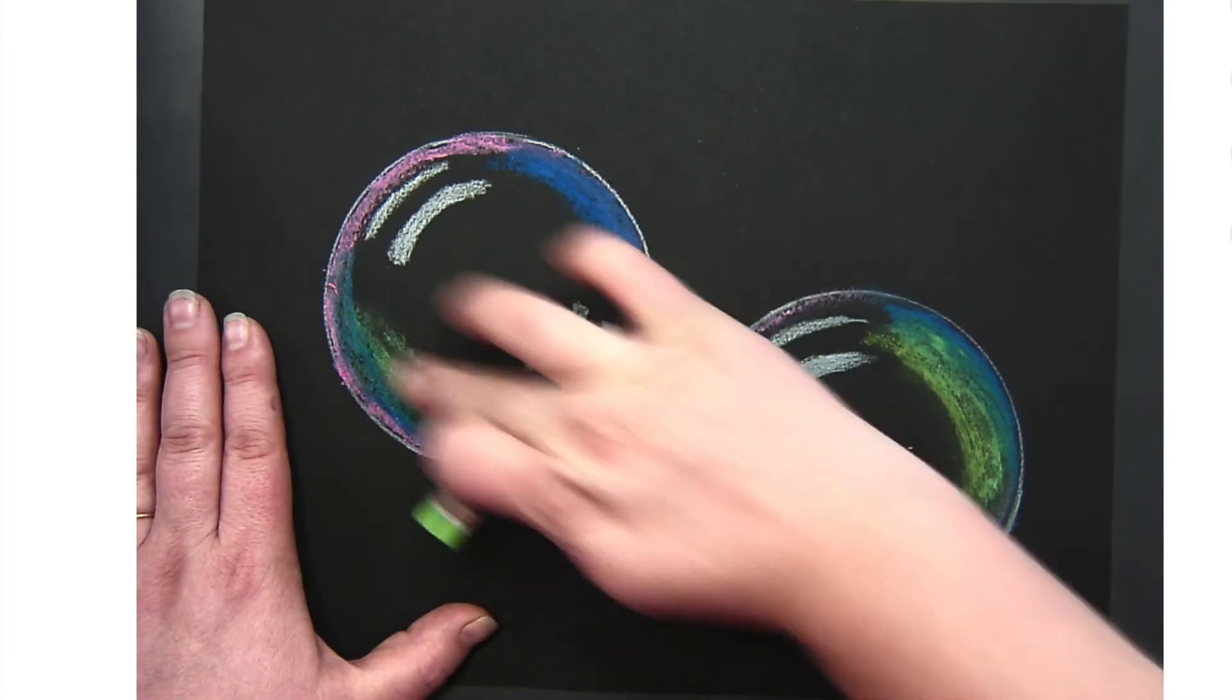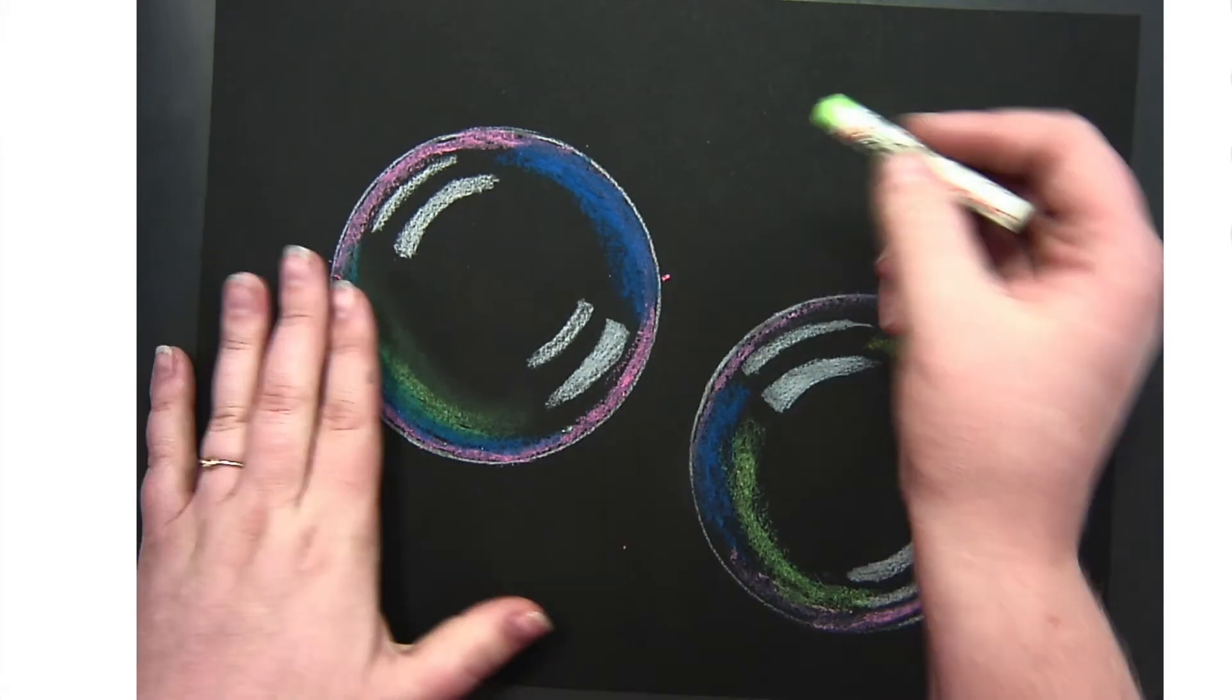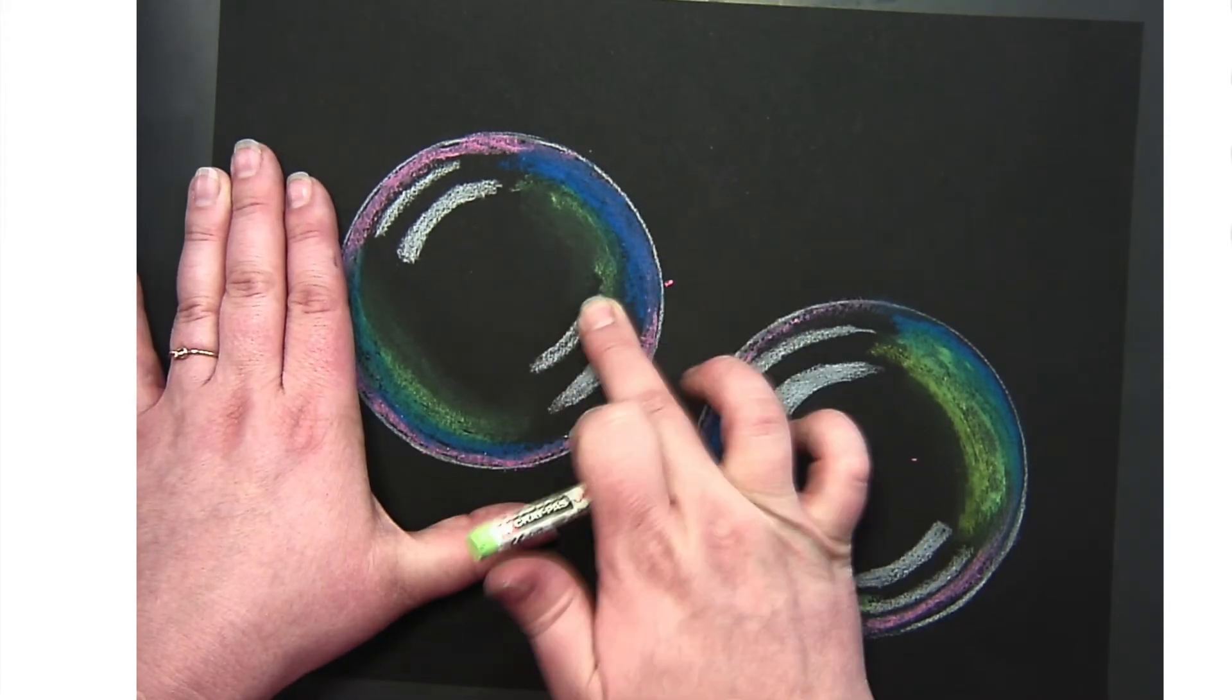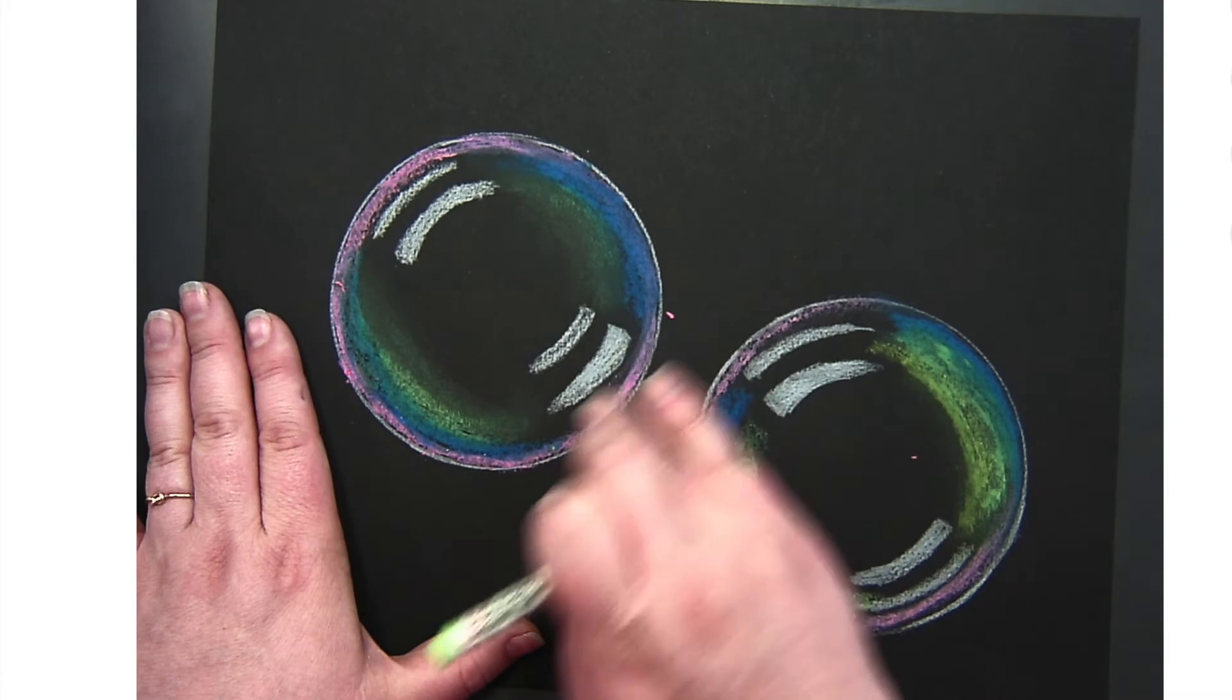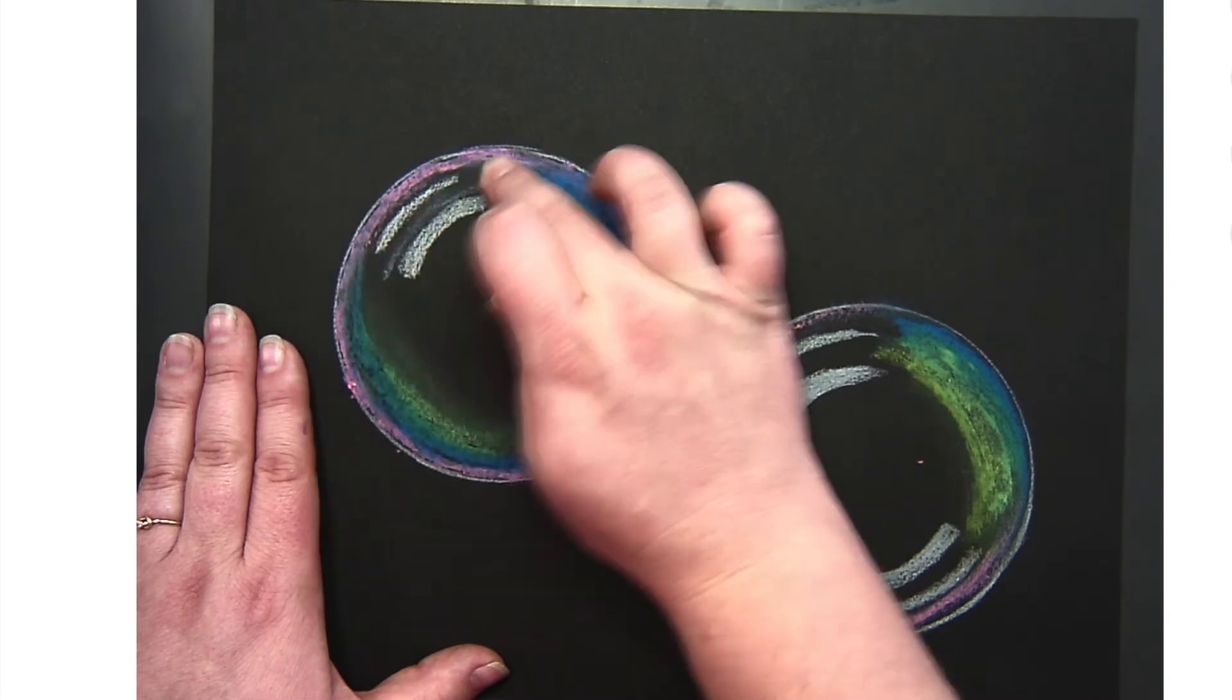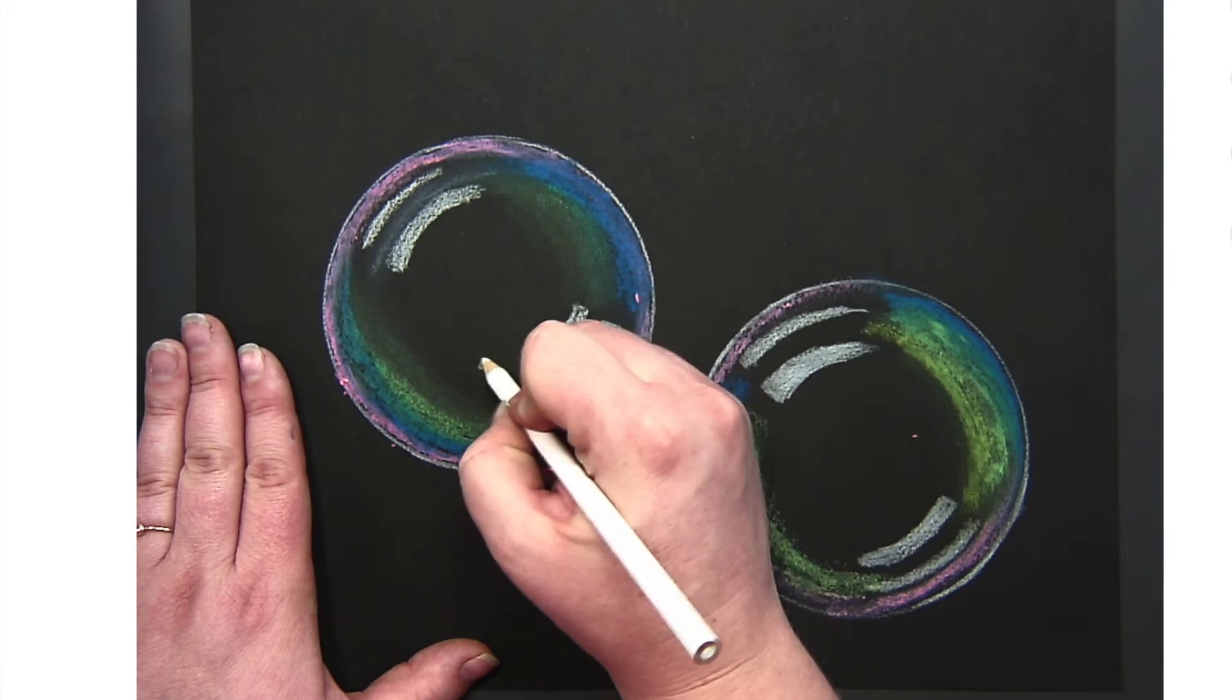I'm using my finger to blend the oil pastels a little bit. This will help make them look more smooth and creates a glare that you would see in a bubble, helping it look more three-dimensional. Use your finger to blend and make the colors look smooth.